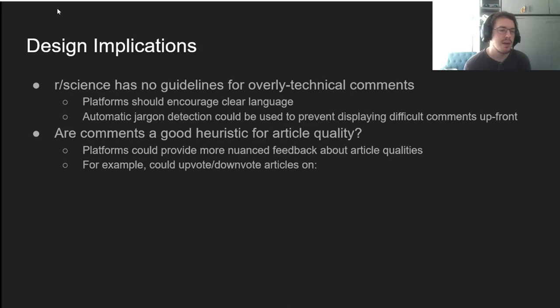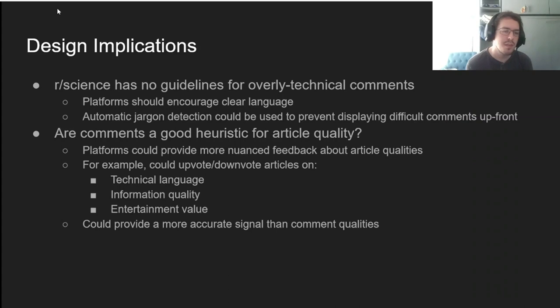For example, platforms could let you upvote or downvote articles on dimensions like their use of technical language, the quality of information, or their entertainment value. A system like this could provide a more accurate signal than relying on comments to make these judgments.